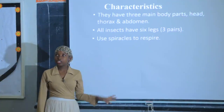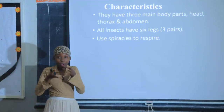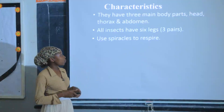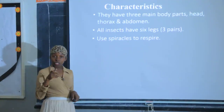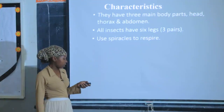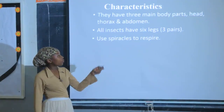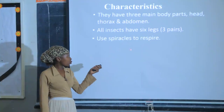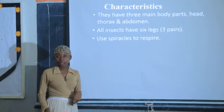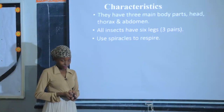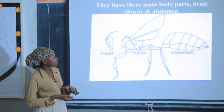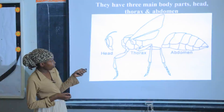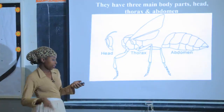A true insect is supposed to have six legs. I know you have questions — you may have seen something that looked like an insect with eight legs. There are some which look like insects but are not true insects. If you don't want to say six legs, you can say three pairs of legs. Also, insects use spiracles to respire — another word for respire is breathe. These are the three main body parts: the head, the thorax, and the abdomen.